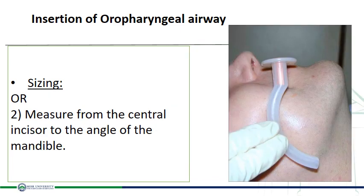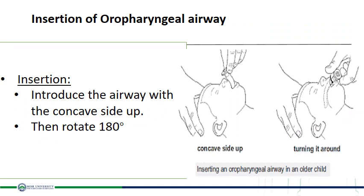أو من central incisors لـ angle of the mandible — من bone to bone. استخدم أي طريقة فيهم اللي تريحكو. بعد ما اخترت الـ size، ابدأ بـ applying الـ oropharyngeal airway upside down — يعني الـ concave side facing سقف الحلق — وأول ما تدخل في الحلق، الف الـ oropharyngeal airway 180 degrees، then advance gently.